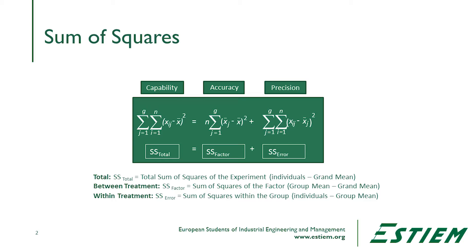We look at the overall performance — that's looking at the capability of the process. When we're looking at each of the factors at a time, we're looking at the accuracy: where is it actually in the location scale? And we'll take a look at the within factor — that's about the precision or the amount of error happening within the treatments.